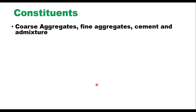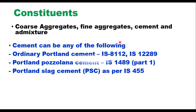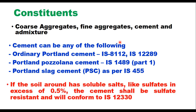The constituents for DLC are the same as for any concrete: coarse aggregate, fine aggregate, cement, and admixture. The cement can be of any type — ordinary Portland cement as per IS 8112 or IS 12289, Portland pozzolana cement as per IS 1489 Part 1, or Portland slag cement as per IS 455. If the soil around has soluble salts like sulphate in excess of 0.5 percent, the cement shall be sulphate resistant.